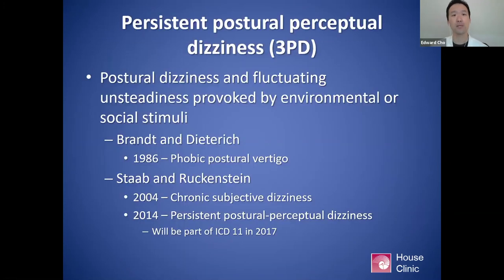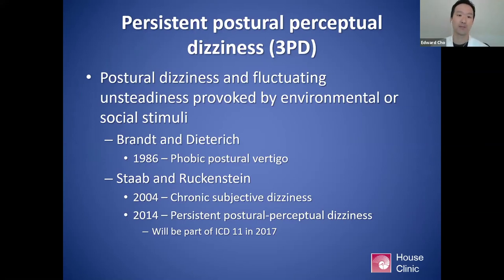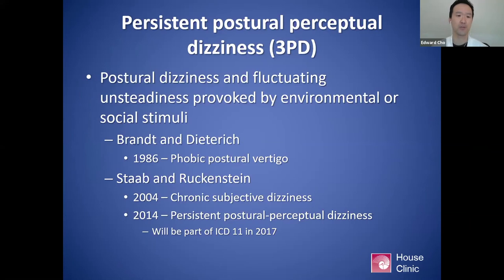3PD is generally considered a postural dizziness and fluctuating unsteadiness provoked by environmental or social stimuli. Some of the concepts were originally laid out by Brandt and Dieterich, German neurologists, in 1986 under the term phobic postural vertigo. Staab and Ruckenstein first brought major characteristics together in 2004 under the term chronic subjective dizziness. In many ways, chronic subjective dizziness and 3PD are fairly synonymous, although 3PD has some refinements. Then in 2014, this was refined to persistent postural perceptual dizziness, and it's thought to be part of the ICD-11.